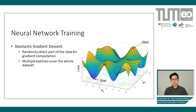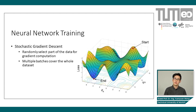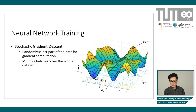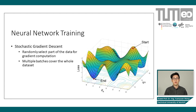If you look at the figure on the right-hand side, imagine that theta A and theta B are the two parameters of your network — a simple network with only two parameters. The z-axis shows the loss function, which is, for example, the negative log likelihood. Your goal is to find the optimal theta A and theta B that goes from your initial value to the optimum value, which is the minimum of the loss function.